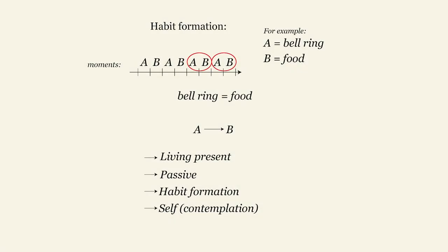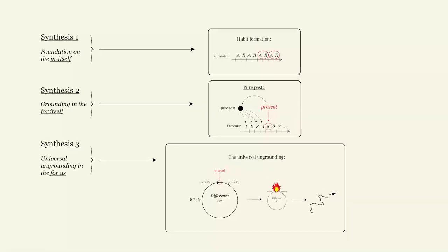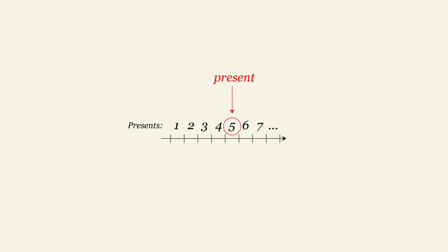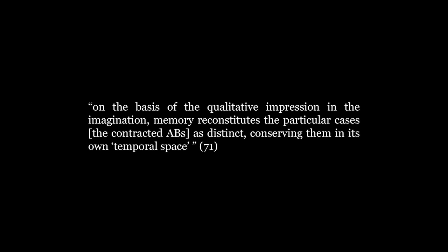The contraction of time in the first synthesis was about imagination. When distinct cases are regrouped into one and form a habit, imagination is at play. Dogs have a lot of imagination. But now a second synthesis appears, which is more complex. What it does is to take elements that were contracted in the first synthesis and recreates the past as an abstraction. This is the formation of memory. On the basis of the qualitative impression in the imagination, memory reconstitutes the particular cases, the contracted A-Bs, as distinct, conserving them in its own temporal space.